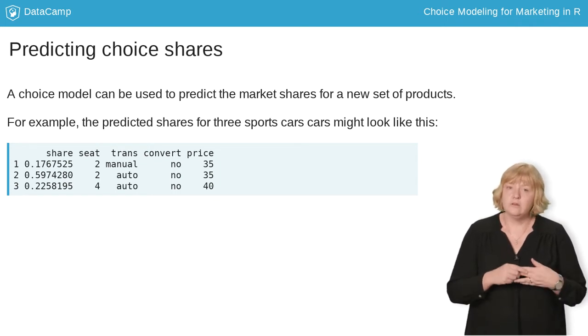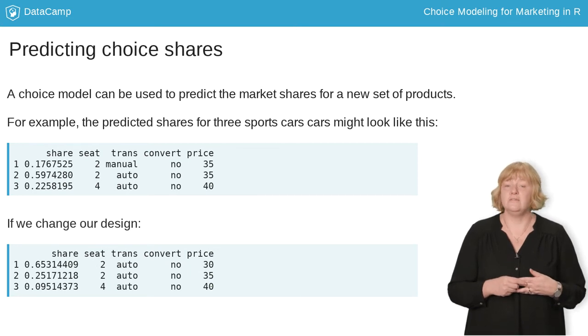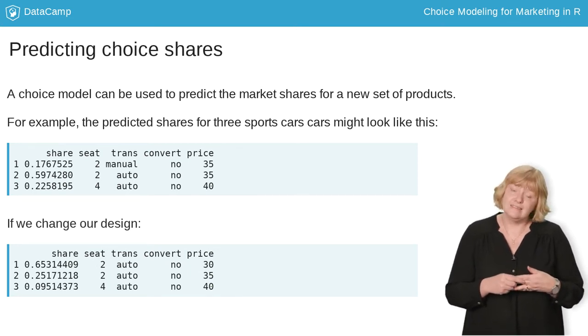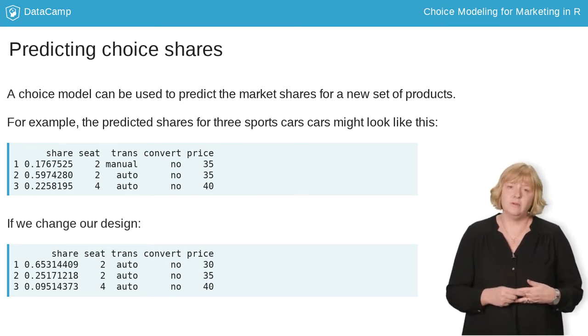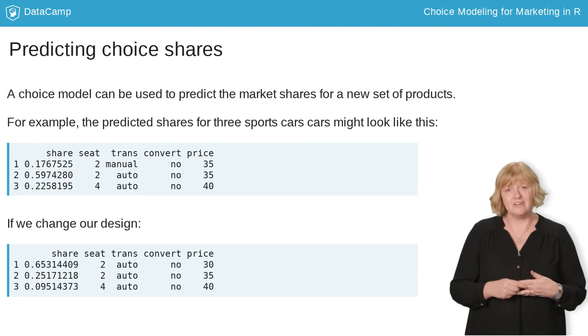And we could make these predictions with the model. When we change the design of the first sports car, it gets 65.3 percent share. That's a lot better.